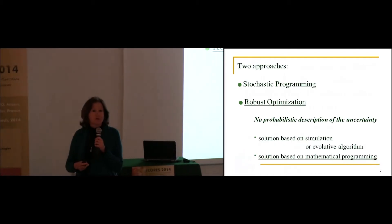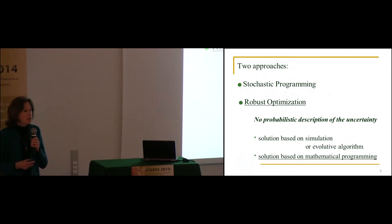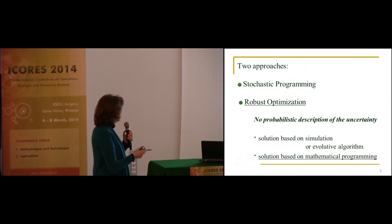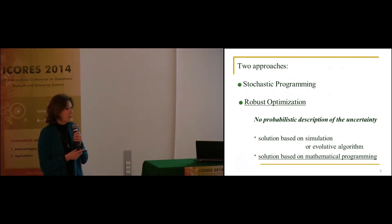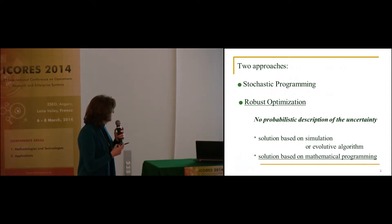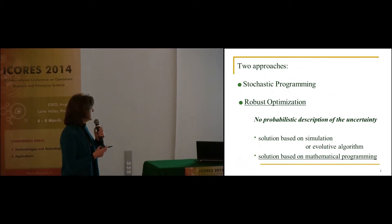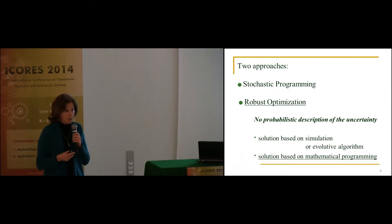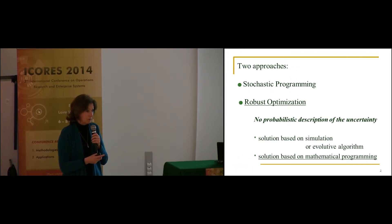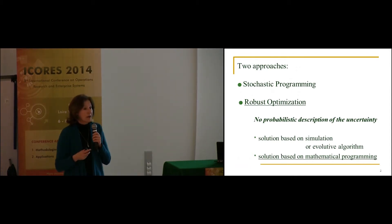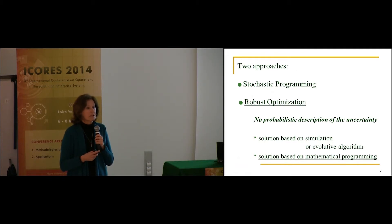There are two approaches to solve problems where there is uncertainty on the data. The first approach, well known for a long time, is stochastic programming, and the second, more recent approach, is robust optimization. The main difference is that in stochastic programming you assume a known probabilistic description of the uncertainty, whereas in robust optimization we drop this assumption. Additionally, in stochastic programming you typically optimize the expected value of the objective function, while in robust optimization we seek a guarantee against the worst case — that is, the worst value of the data which can happen.